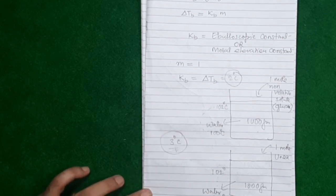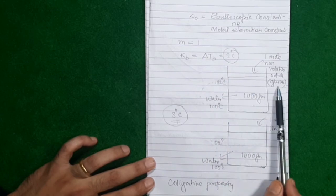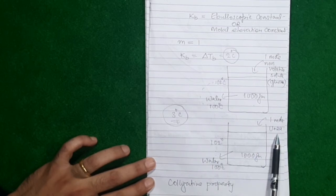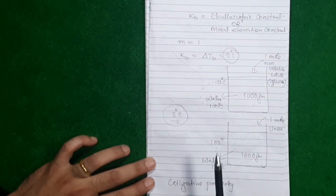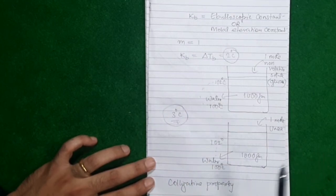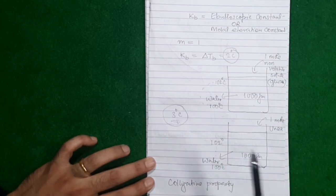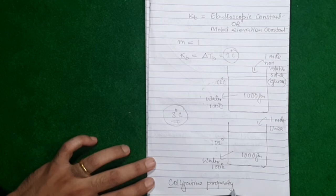Now look at this phenomenon of elevation of boiling point. The boiling point of water rises by 2 degrees when you add glucose and also rises by 2 degrees when you add urea — irrespective of the fact that glucose and urea are chemically different substances. Yet, as long as you add the same amount, the boiling point will always rise by the same amount. Elevation of boiling point only depends on how much solute you add, not on what you add.